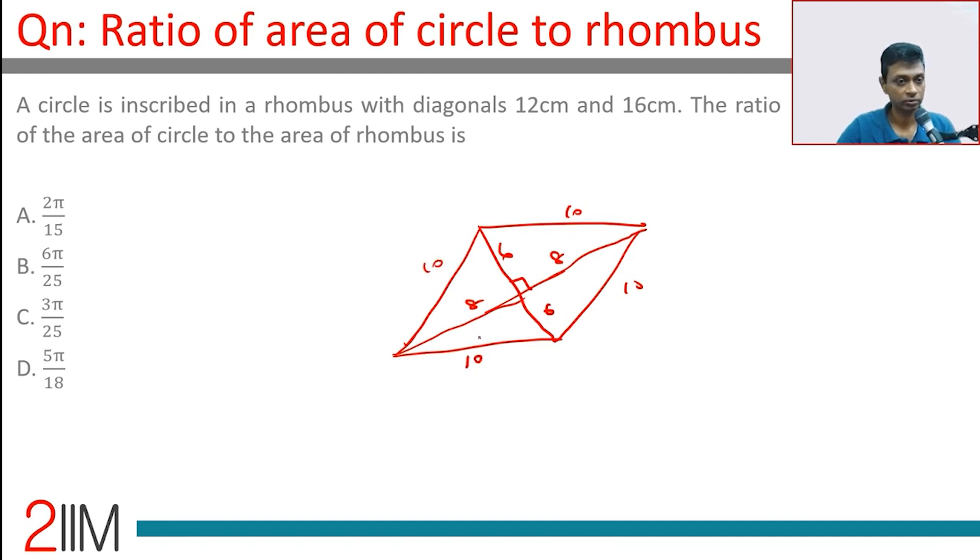A circle is inscribed inside this. We want to find the ratio of area of circle to the area of rhombus.